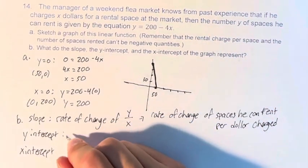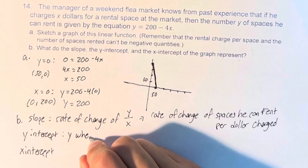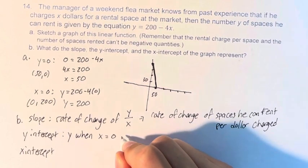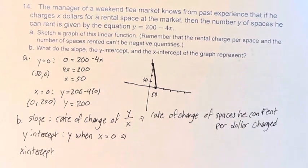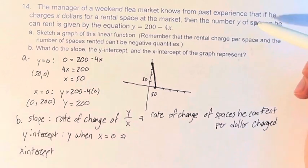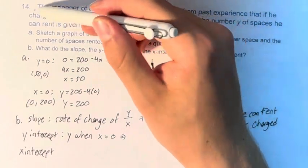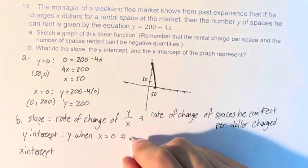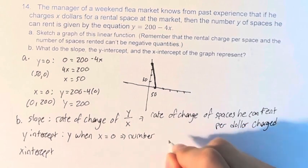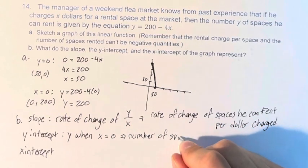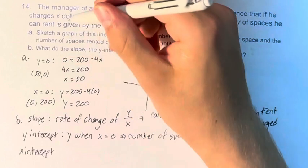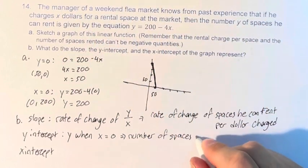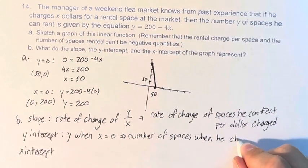The y-intercept is y when x equals 0. What does this mean? Well, that's the number of spaces when he charges 0 dollars. Just connecting this to the actual problem and what the variables represent. Number of spaces, he charges 0 dollars.